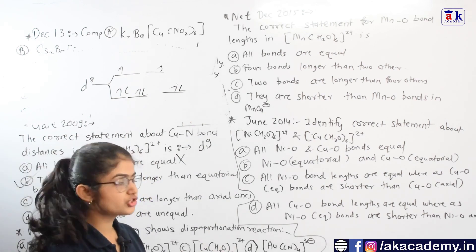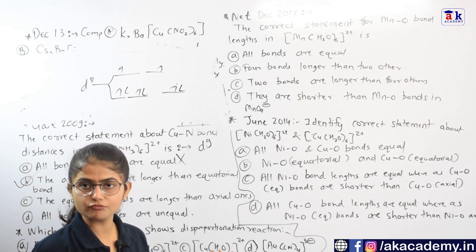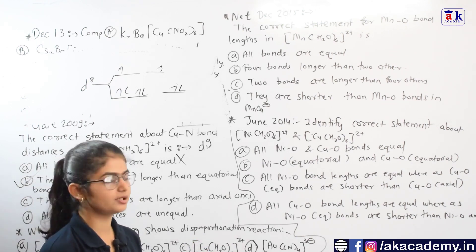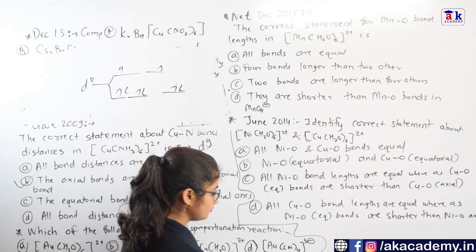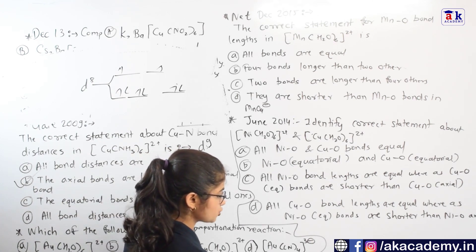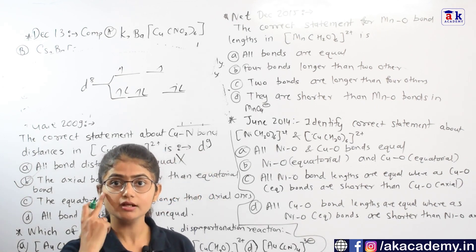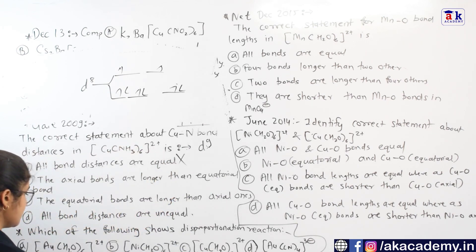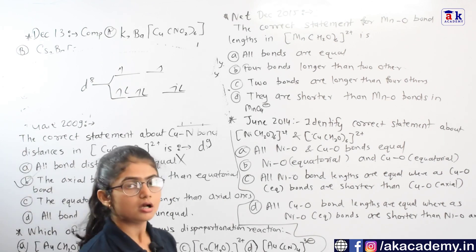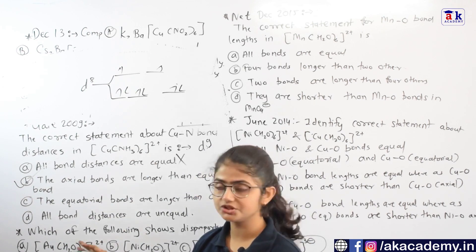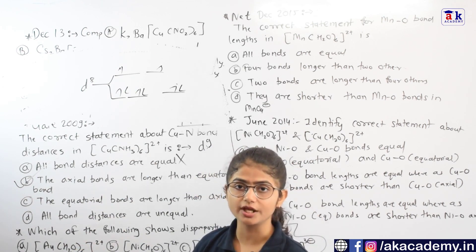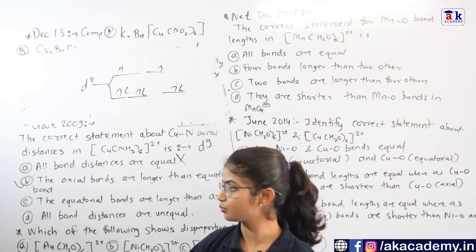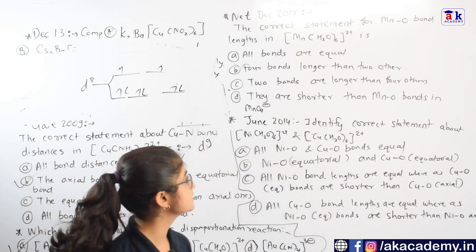For Cu²⁺ in a non-chelated complex, the complex is very stable due to Jahn-Teller distortion, so it will not exhibit disproportionation. Au in the +1 state is a stable state, as discussed in the consequences of JTD. However, Au²⁺ is very unstable, exhibits JTD, and will undergo disproportionation — getting oxidized to Au³⁺ or reduced to Au⁺. So Au²⁺ is the correct answer.